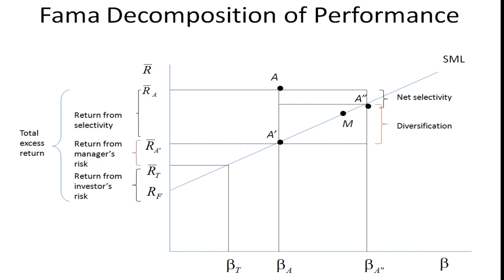Let's take a look at portfolio performance and a decomposition proposed by Eugene Fama, the 2013 Nobel Prize winner in economics. On the x-axis we have beta, the systematic risk or the non-diversifiable risk, and on the y-axis we have excess return or expected return.